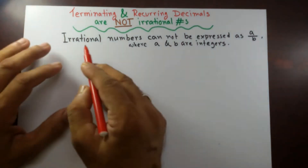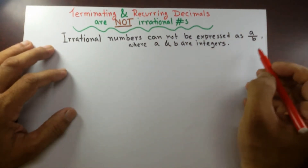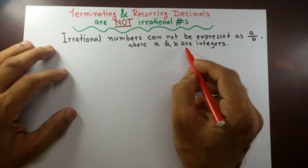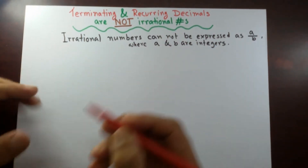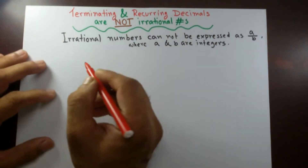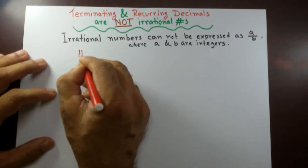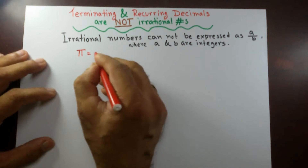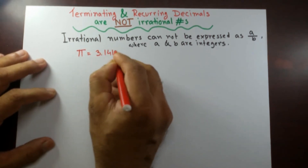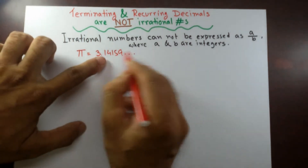You probably remember that irrational numbers cannot be expressed as a over b, where a and b are integers. In my last video on irrational numbers, I showed some famous irrational numbers — pi, whose value is 3.14159, correct to 5 decimal places.